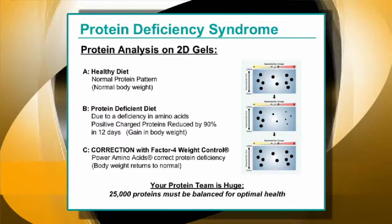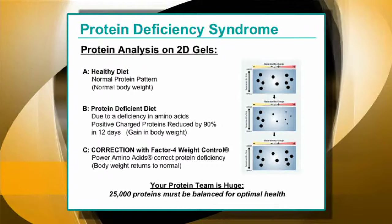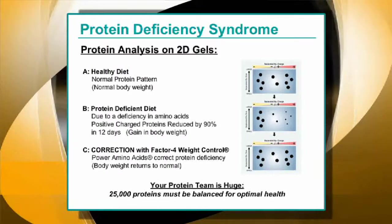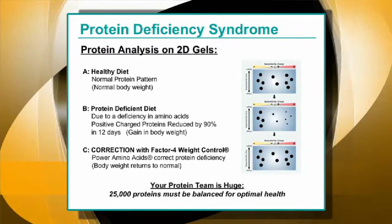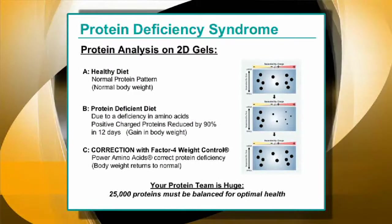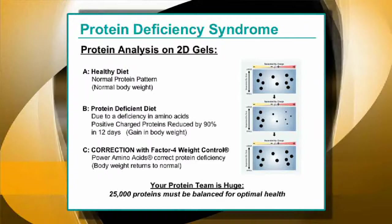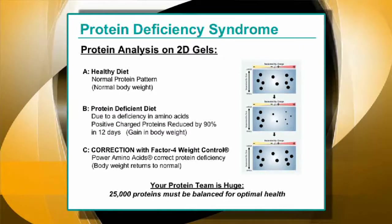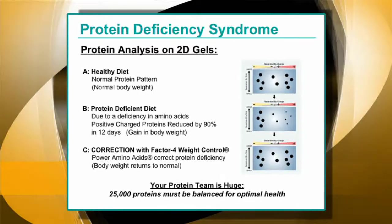I want to demonstrate to everyone about protein deficiency. I show three graphics on the right side. Graphic A is a healthy diet, and on that graphic you will see 10 proteins. The four proteins on the left are negatively charged, the four proteins on the right are positively charged, and those in the middle have both negative and positive charges — this is a normal spectrum of health. In graphic B, when there's protein deficiency in the diet, you will notice that the four proteins on the right are greatly diminished in size, which means that those members of your protein team are largely lost. It's important to get those protein team members back, and we can do it by adding Factor Four weight control, which contains power amino acids, and we can regenerate the healthy profile.